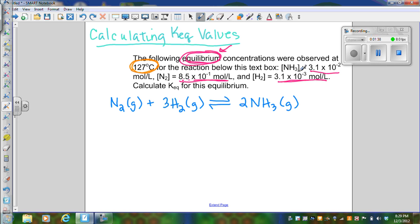We've got an equilibrium concentration for ammonia, one for nitrogen, one for hydrogen, and our job is to calculate the equilibrium constant Keq for this equilibrium.